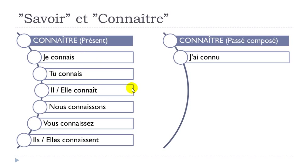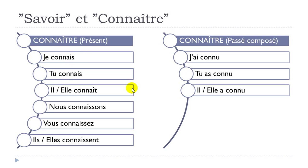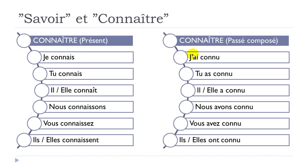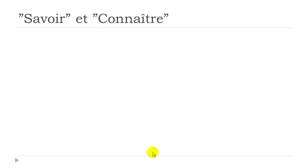The passé composé form of Connaître: j'ai connu, tu as connu, il a connu, elle a connu, nous avons connu, vous avez connu, ils ont connu, elles ont connu. Same rule: avoir at the present form, then the participe passé of Connaître, which is 'connu,' applied to every person.